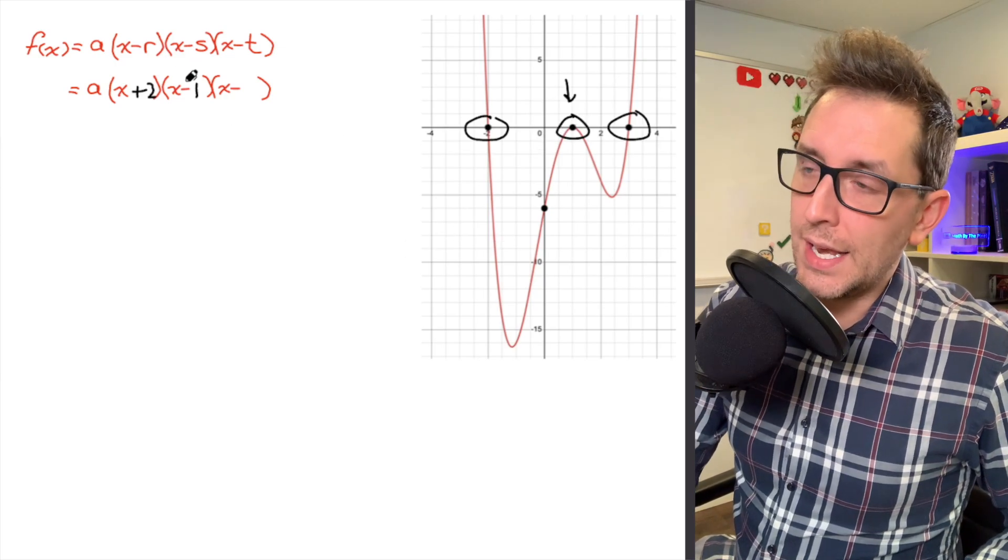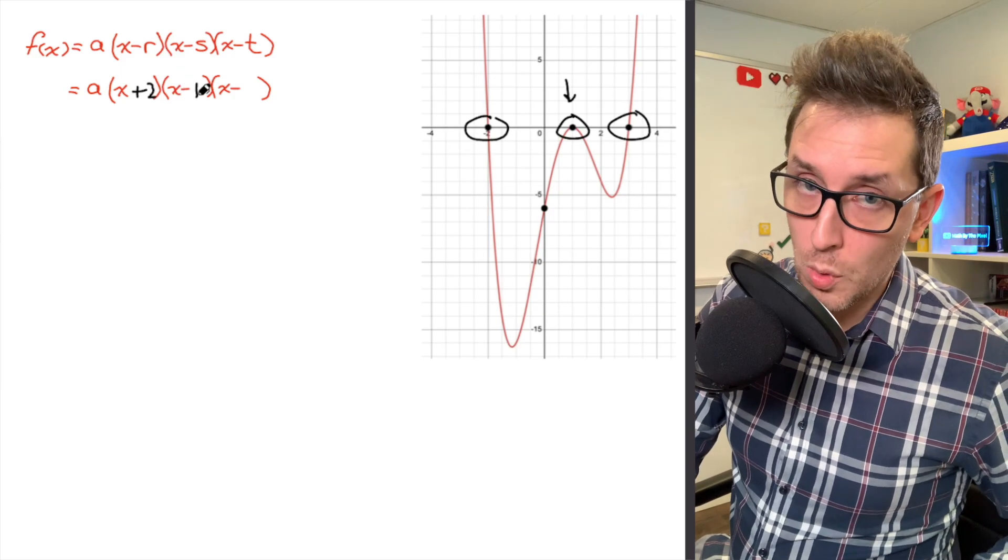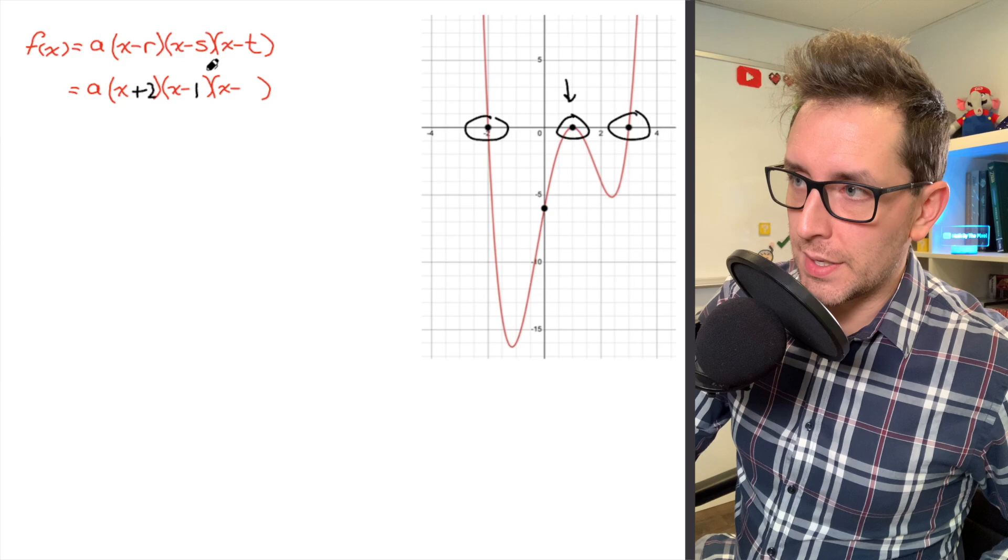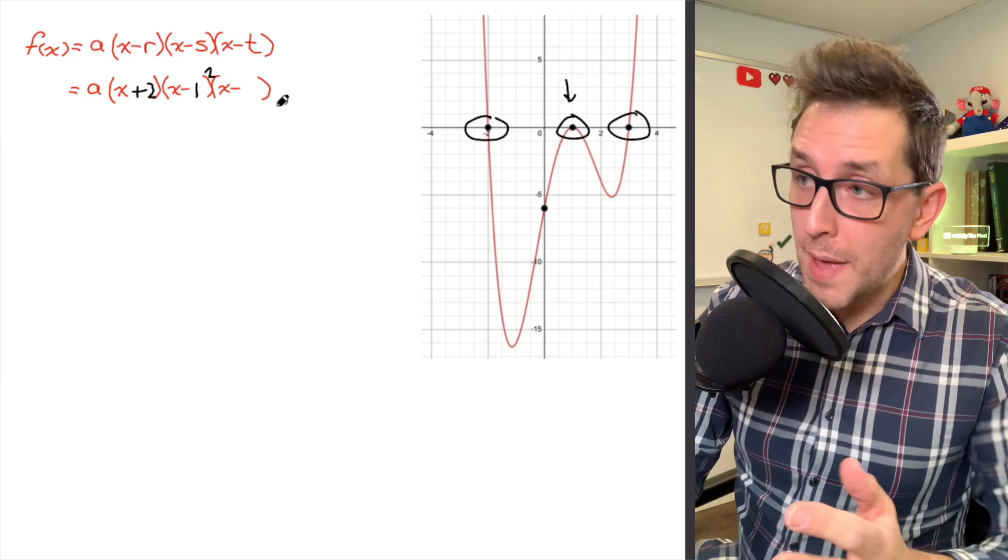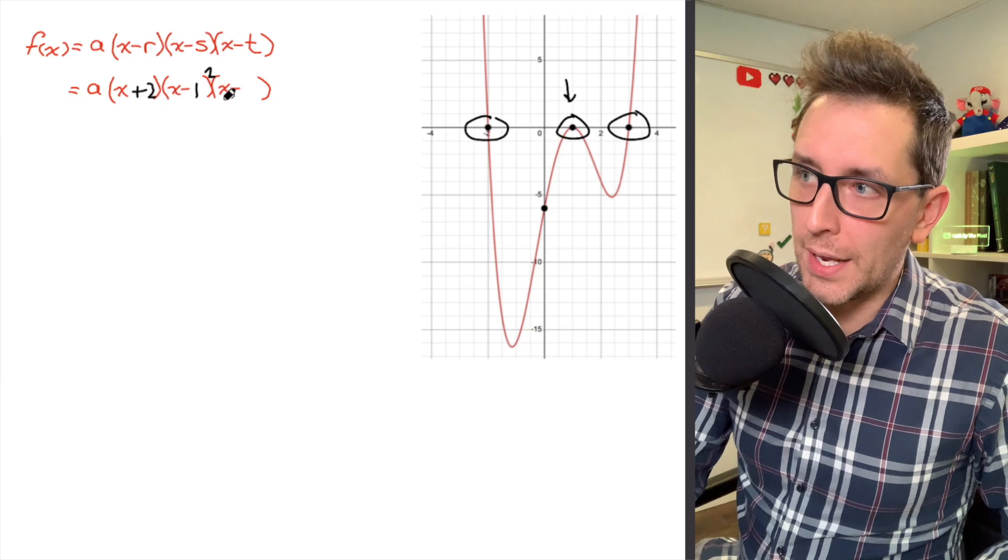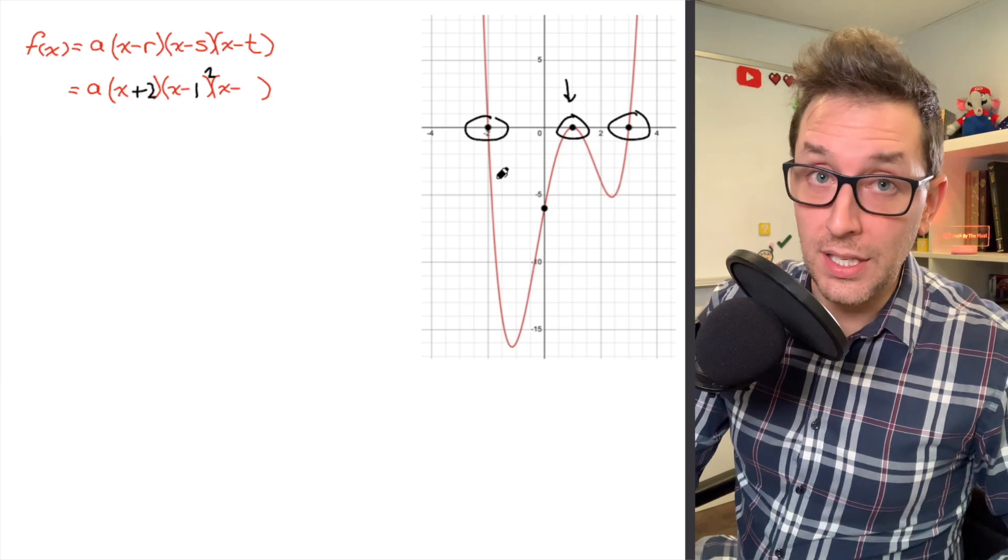Now what does all this mean for the equation of our polynomial function? Well, what this means is that when I look at the binomial that corresponds to that x-intercept, that x minus 1, I need to make a slight adjustment here, and that's going to be raising that binomial to the power of 2. So making that slight adjustment to our binomial of x minus 1 is going to help us produce the graph that we end up seeing here on the right.